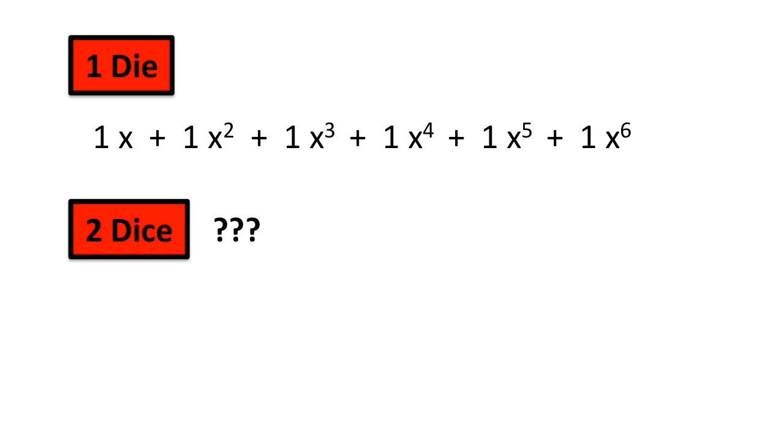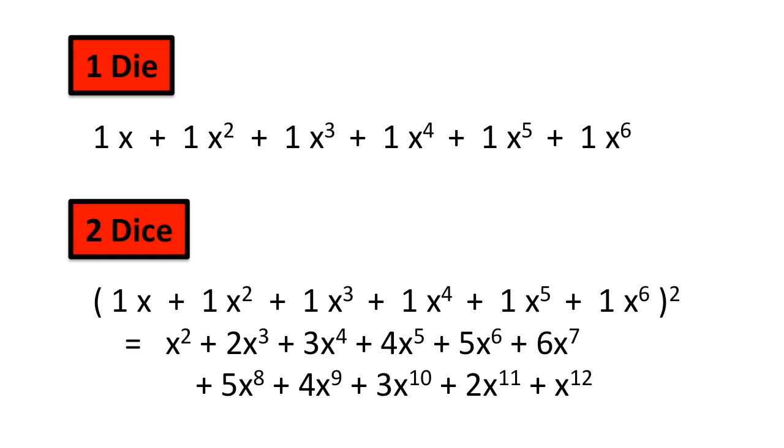What if we roll two dice? Then we square the polynomial. This expands to produce this expression. This tells us that there are 5 ways to get an 8, just like we saw before.